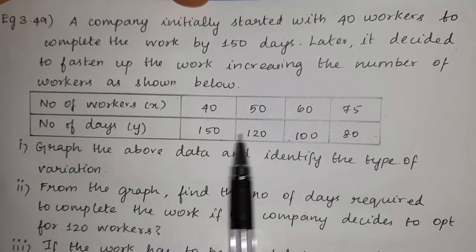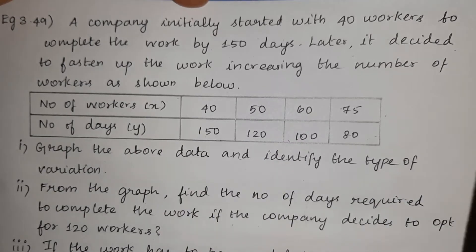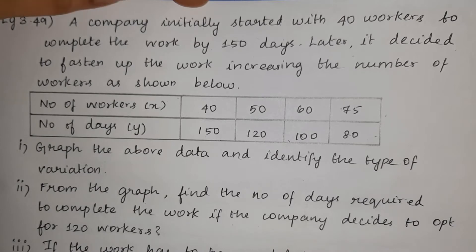The data shows a different type of variation — it is either direct variation or indirect variation.